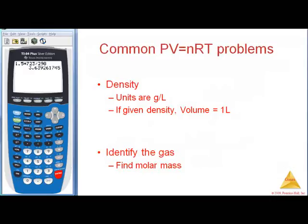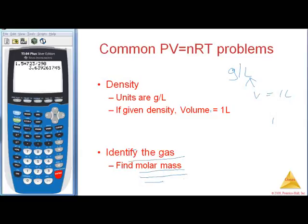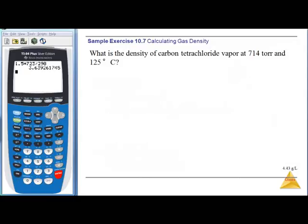Some common AP exam problems are density problems. The key to density problems is to think of density as grams per liter — so when you're given density, your volume is 1 liter. If a problem asks you to identify a gas, you usually find its molar mass. Let's look at: what is the density of carbon tetrachloride vapor at 714 torr and 125°C?